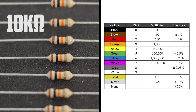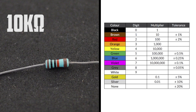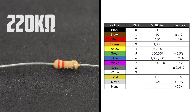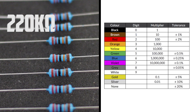Here are 10 kilo-ohm resistors. The 4 band is brown, black, orange, and the 5 band is brown, black, black, red. And lastly, here is a 220 kilo-ohm resistor. The 4 band is red, red, yellow, while the 5 band is red, red, black, orange.